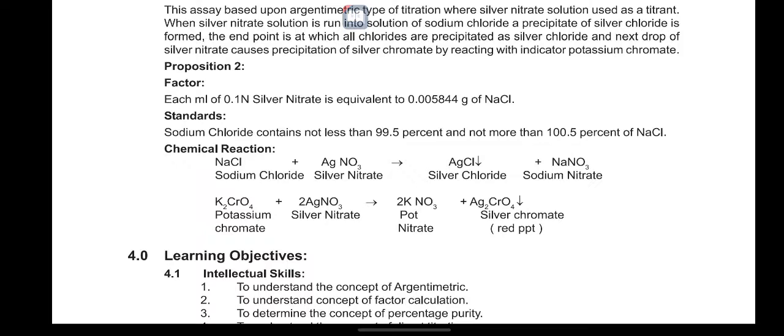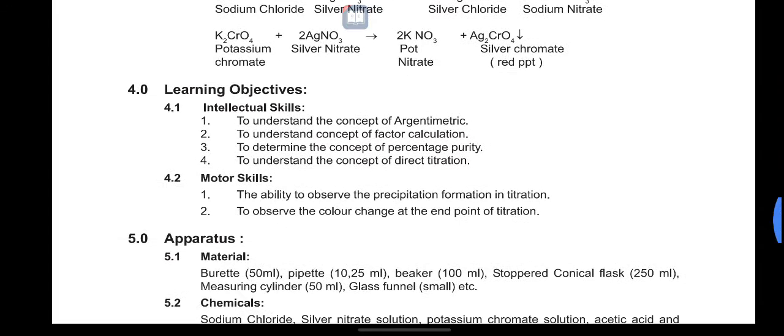When the precipitation of silver chloride is complete, the remaining silver nitrate reacts with potassium chromate indicator to form a brick-red precipitate of silver chromate, indicating the end point.